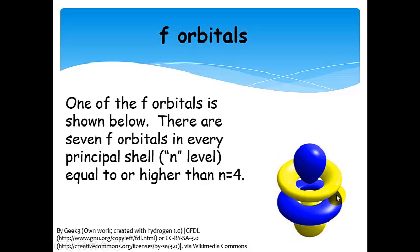This looks a little bit like the dz squared, except there'd only be one of these rings. That gives you an idea of what the dz squared looks like. But this is one of the F orbitals. Some of them look quite different from this also. Remember, the lowest N level that can have F orbitals is N equals 4.